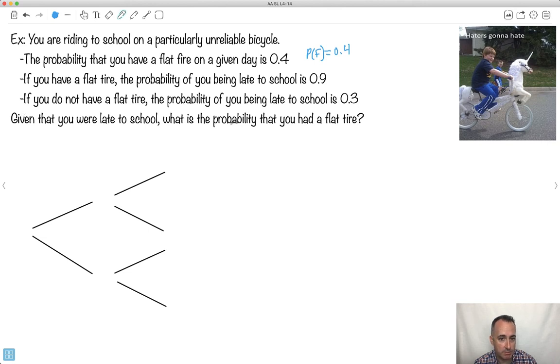So given that you're late to school, what's the probability you had a flat tire? Let's try to figure out what we're trying to get here. We want to know the probability of flat given that you were late. If you remember the equation for conditional probability, probability of A given B is always the probability of A and B happening, so flat and late, all that divided by the second one, which is probability of late. So I just got to figure out this and I've got it.